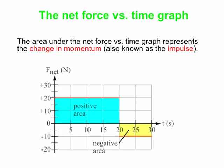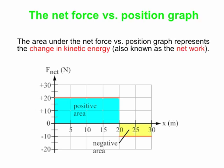Let's go back to these areas under curves. Here we have the net force versus time graph — the area under this graph is connected to the change in momentum, also referred to as the impulse. Sometimes the area is positive if you get positive values of force, and sometimes negative if your force is negative. If instead we plot force as a function of position — F versus x — then the area under the curve is equal to the change in kinetic energy. The change in kinetic energy is also referred to as the net work.